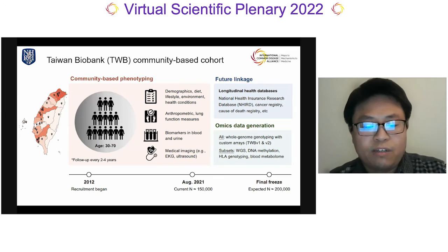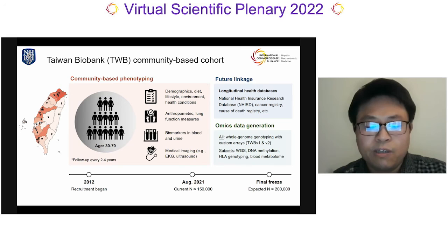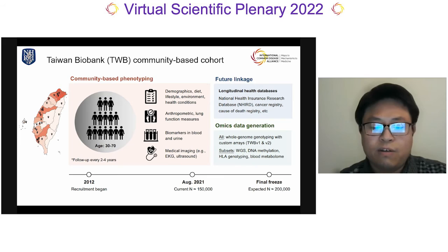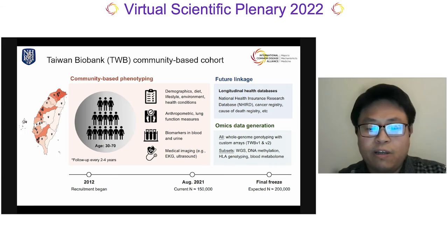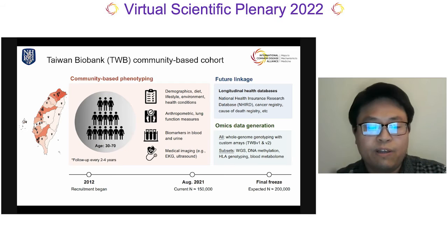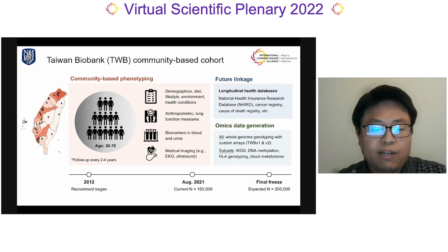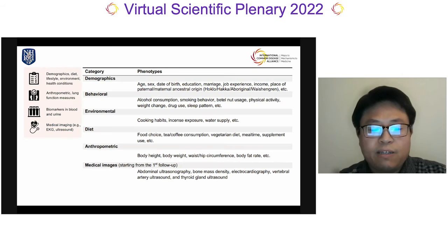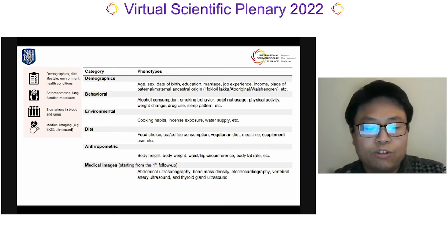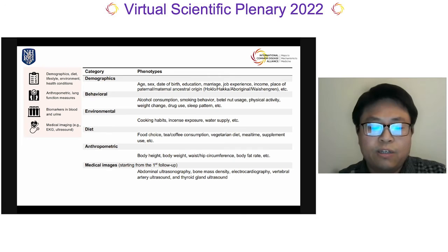I'll give a quick overview of the Taiwan Biobank, or TWB. The Taiwan Biobank is a community-based prospective cohort study of the Taiwanese population with multi-omics genomic data and longitudinal phenotypic and environmental measures. Since 2012, the cohort has been enrolling men and women aged 30 to 70 with no prior diagnosis of cancer from more than 30 recruitment sites across Taiwan, distributed based on population density of different counties and cities, with an expected target sample size of 200,000. At baseline, each participant undergoes physical examinations and a structured interview reporting a wide range of phenotypes including demographics, behavioral, environmental, diet, anthropometric, and medical imaging phenotypes.